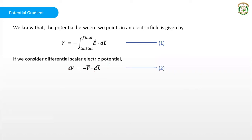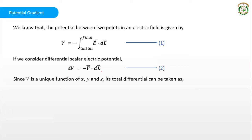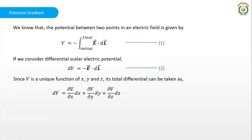Now, V is a function of x, y, and z. So its total differential is the sum of its variation along x, y, and z. In rectangular coordinates, dV can be written as the sum of its partial derivatives: dV = (∂V/∂x)dx + (∂V/∂y)dy + (∂V/∂z)dz. We use partial differentiation because V varies not just with x but also with y and z.